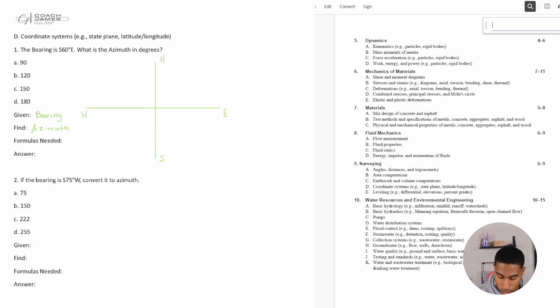All right. So for bearings, they always are in reference from the north or south. So anytime you get a bearing and it says, in this particular case, south 60, then we are referencing 60 degrees from the y coordinate, south. So it says the bearing is south 60 east. So I know for a fact that it can only be in this quadrant, right? That's the south east quadrant.